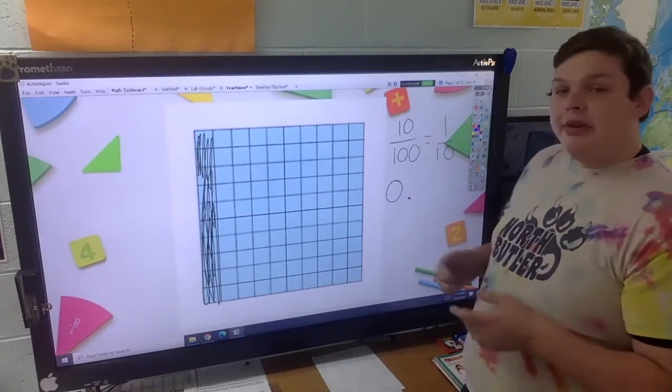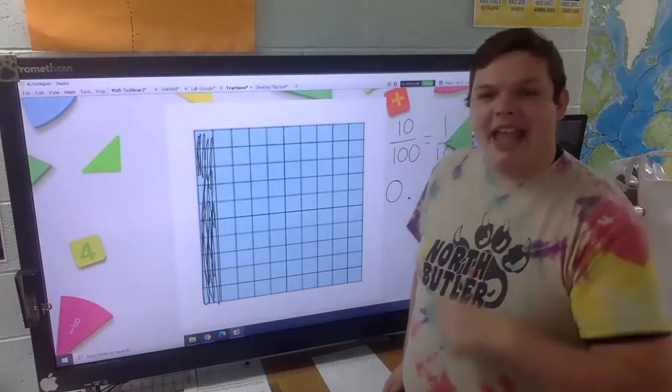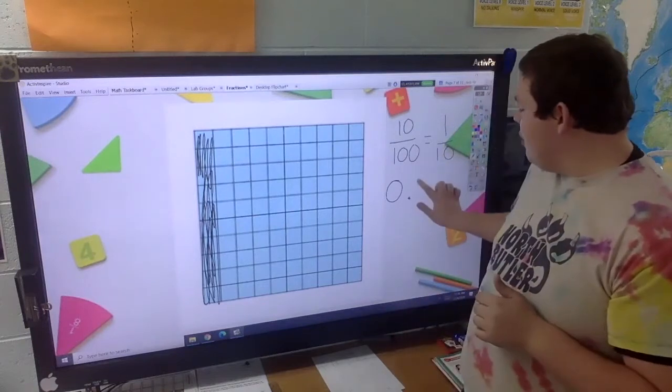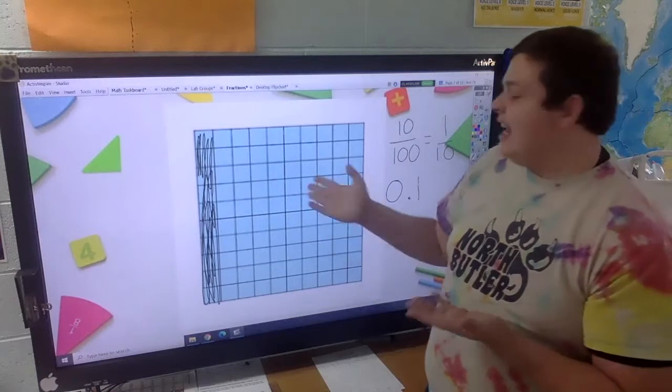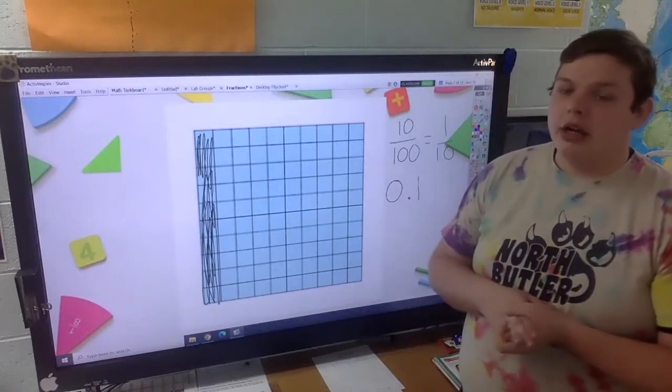It would look like zero and we have one tenth. So that means we can put a one in this place. We don't have any extras, so we are good to go.